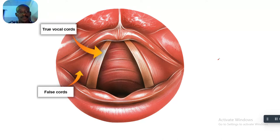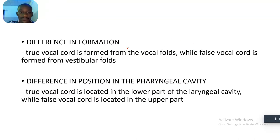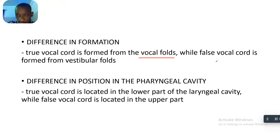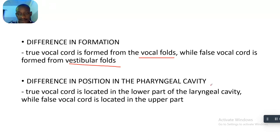True vocal chords versus false vocal chords. The first differentiation is formation. True vocal chords are formed from vocal folds, while the false vocal chords are formed from vestibular folds. That is the first difference — formation.